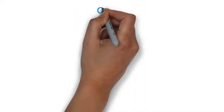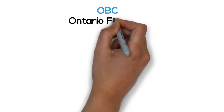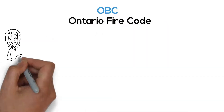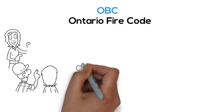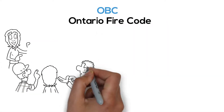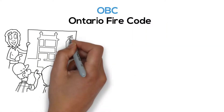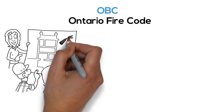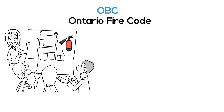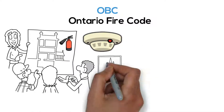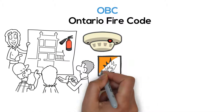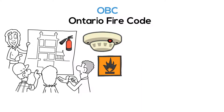The OBC includes the Ontario Fire Code, which specifies requirements in construction and equipment for fire safety. Materials and systems to deal with fire and smoke are emphasized.